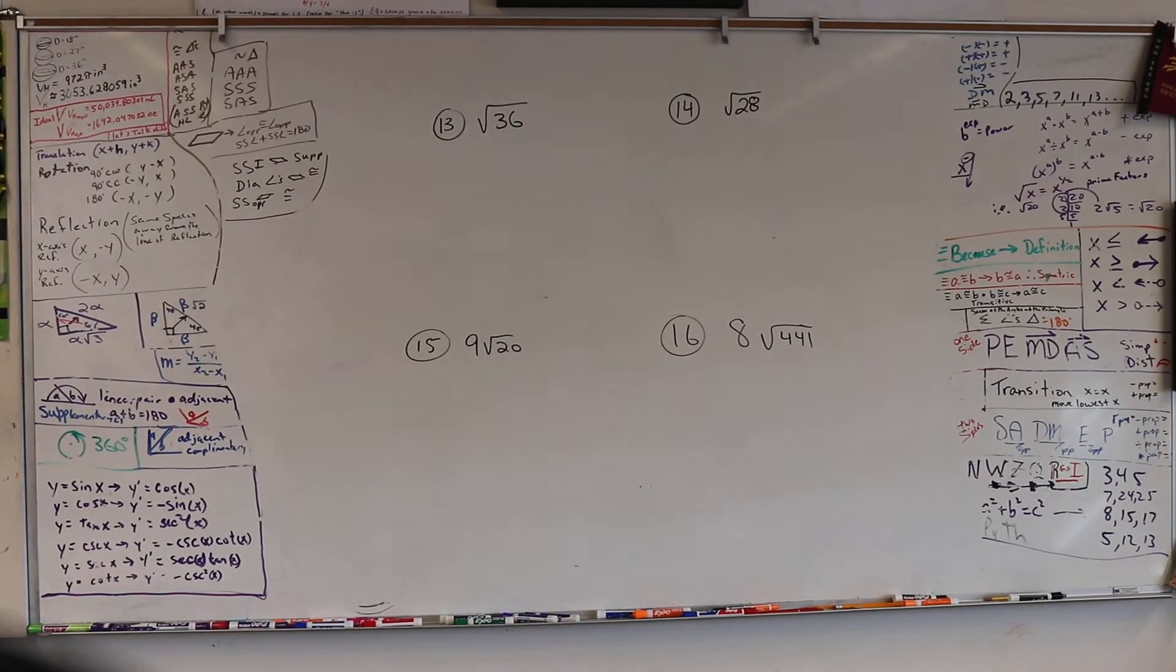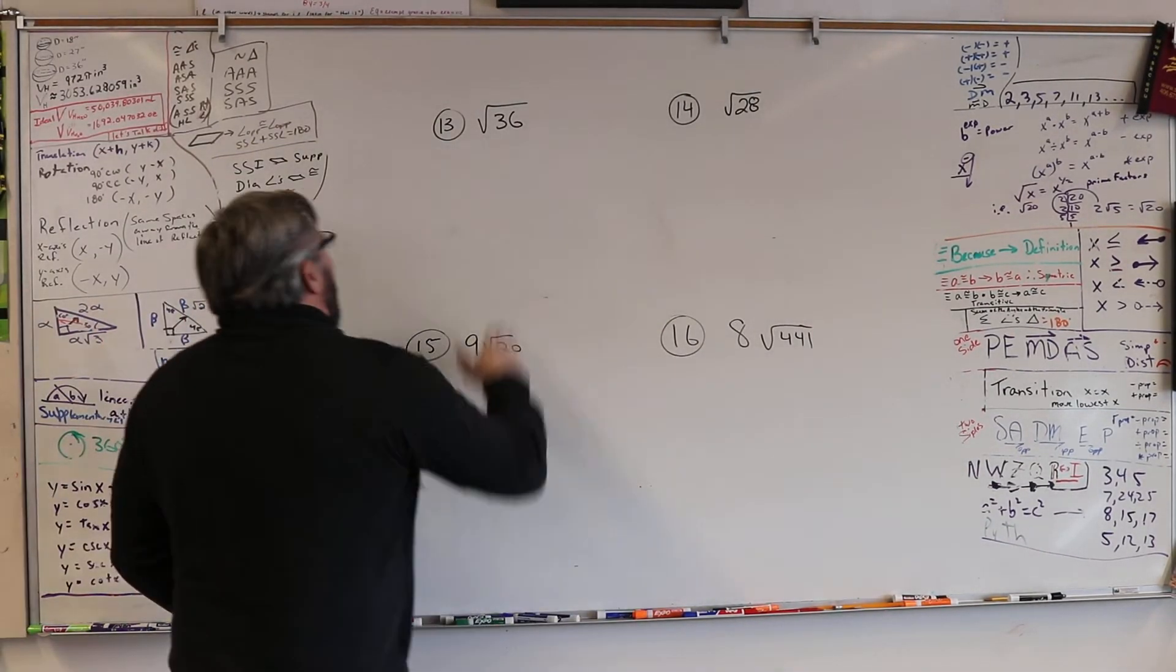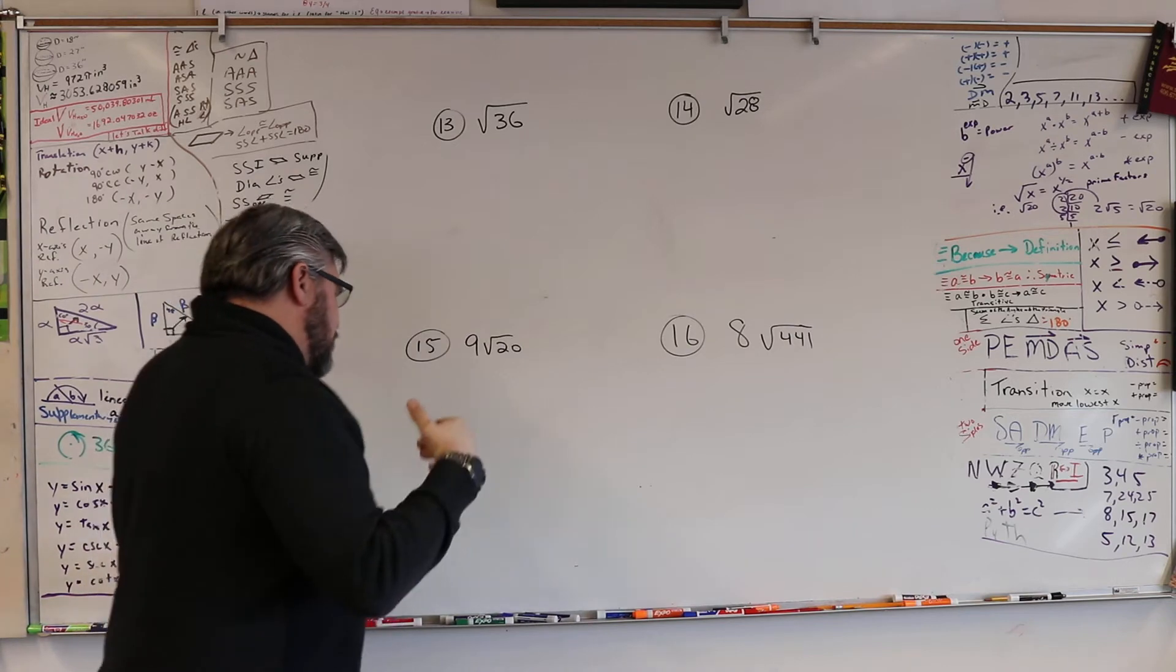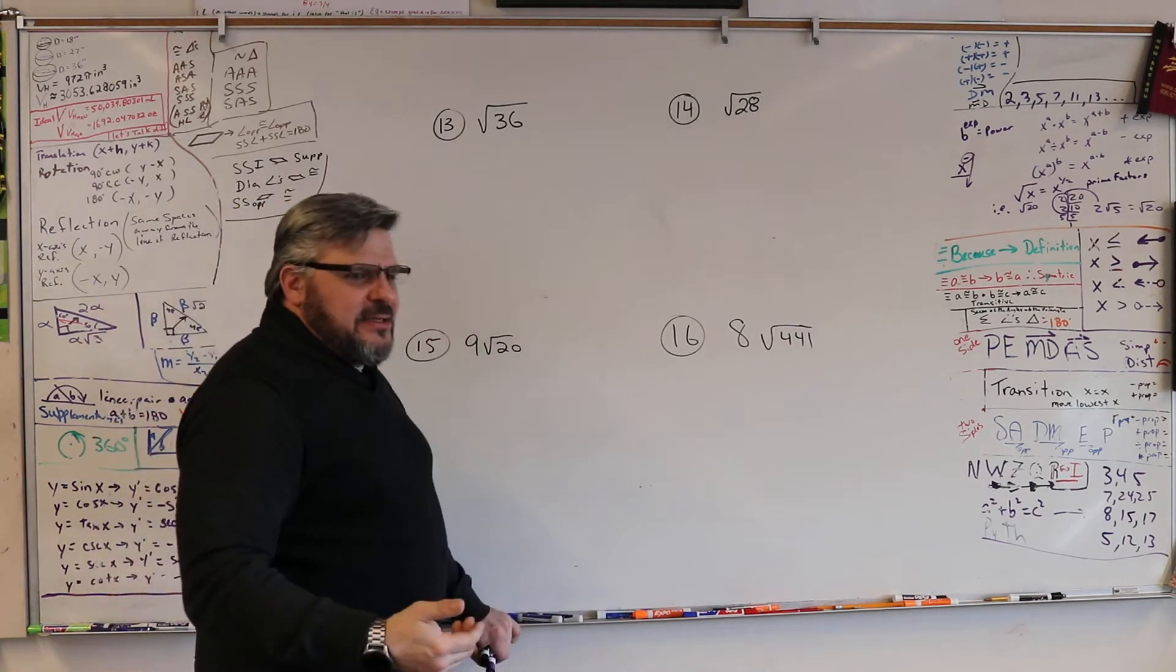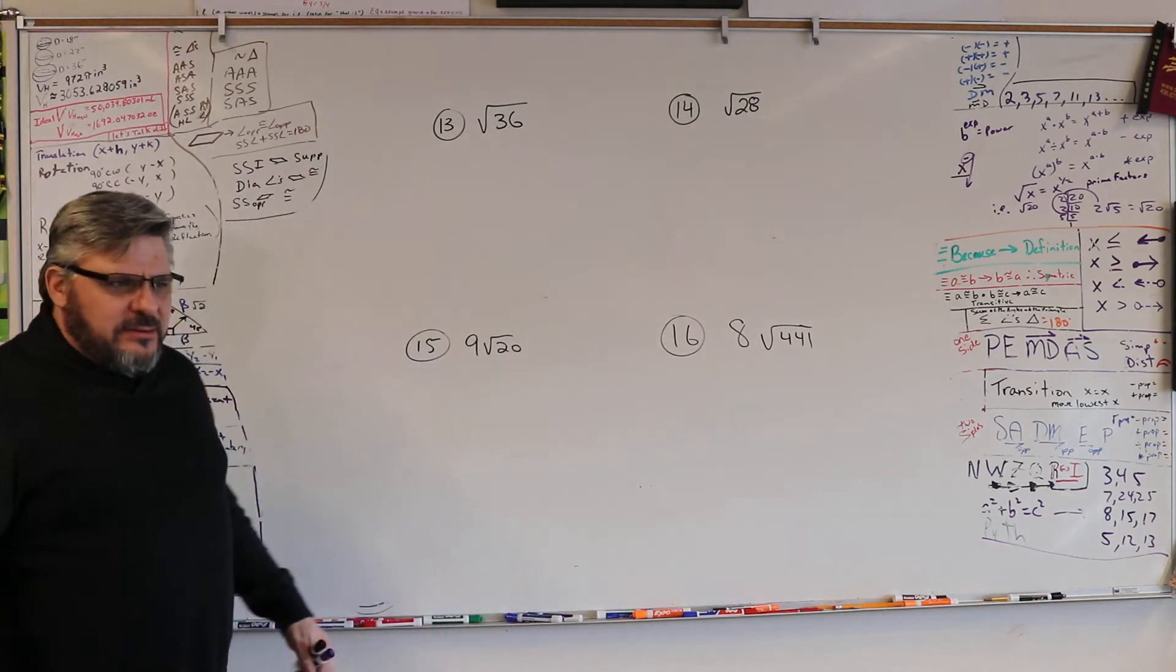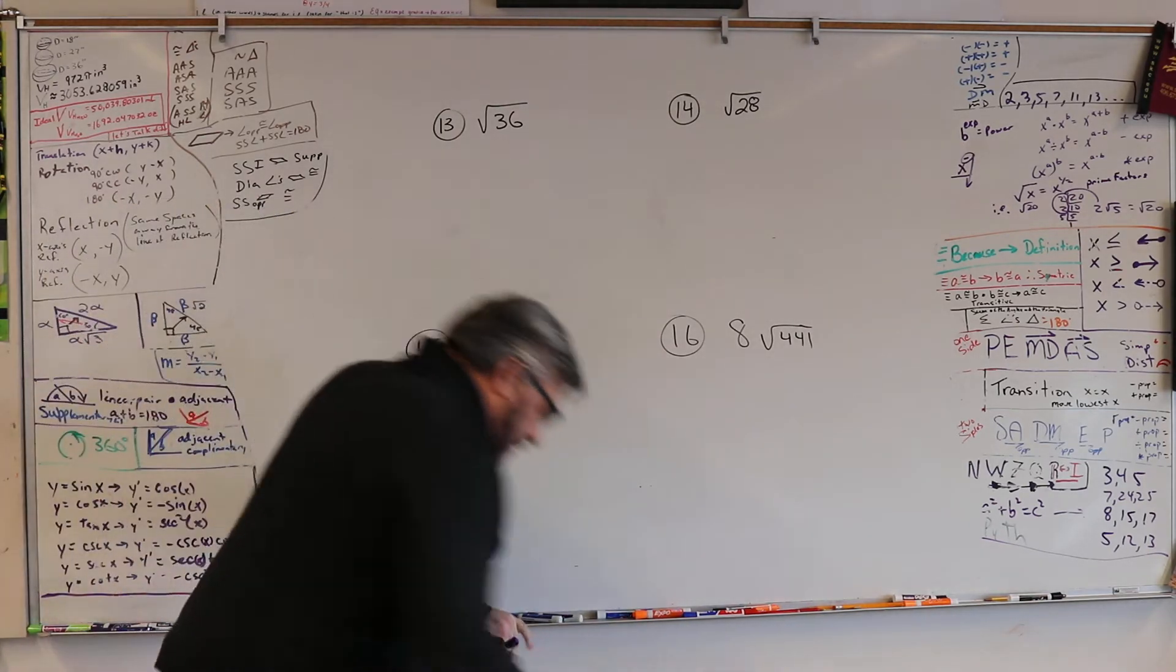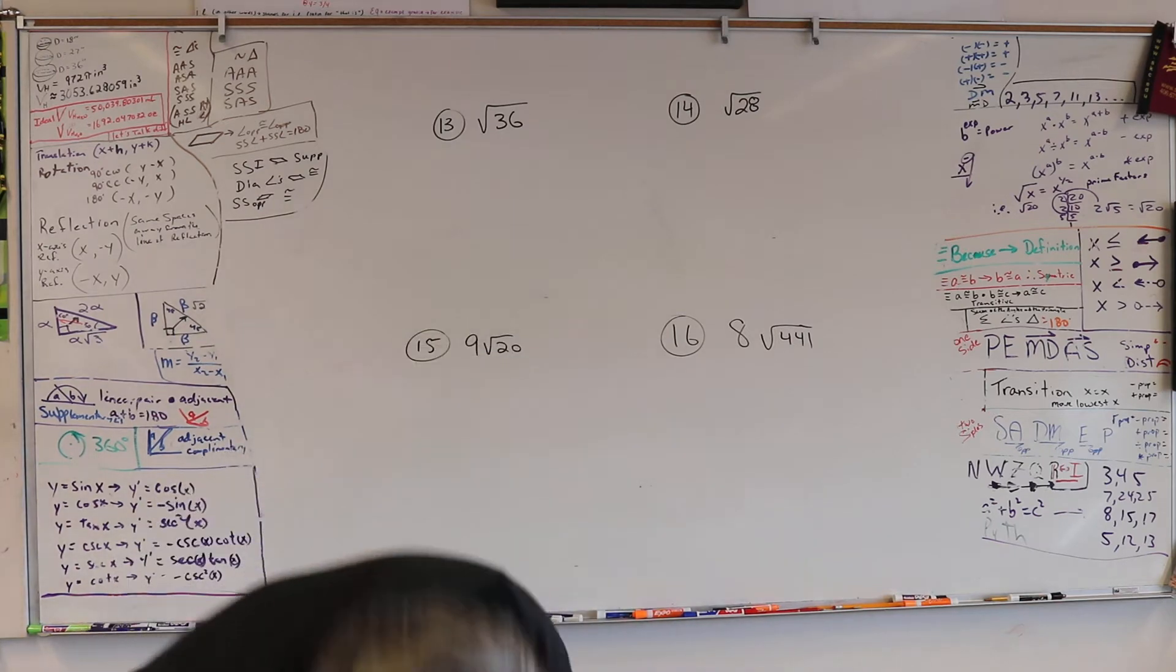Alright, so every step we're going to treat everyone, even though I know that the square root of 36 is 6, that is super easy because I know 6 squared, right? 6 times 6 is 36. But I want you to practice, ladies, I want you to practice breaking it down.